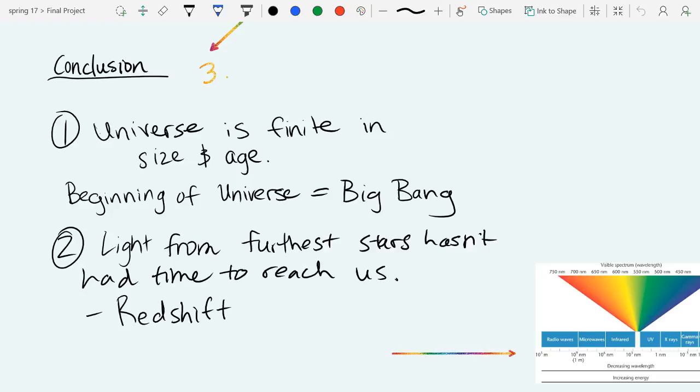The second reason our night sky is dark is that if the universe has a finite age, the light from the furthest stars hasn't had time to reach us yet. Not only has the light from the furthest stars not had time to reach us, but stars also redshift as they move away from us.